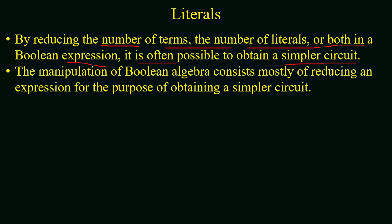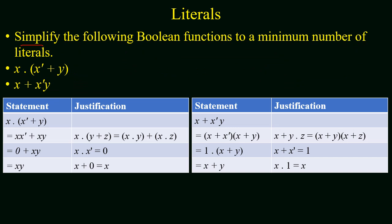We can say that by reducing the number of terms, the number of literals, or both in a Boolean expression, we obtain a simplified form of the circuit. The manipulation of Boolean algebra consists mostly of reducing an expression for the purpose of obtaining a simplified circuit or simplified Boolean expression. Now we have to simplify the given Boolean function x·x' + y to the minimum number of literals. Applying Boolean rules, we expand to x·x' + x·y. Since x·x' equals zero, the expression reduces to zero plus x·y, which equals x·y.